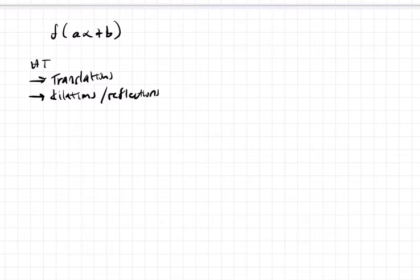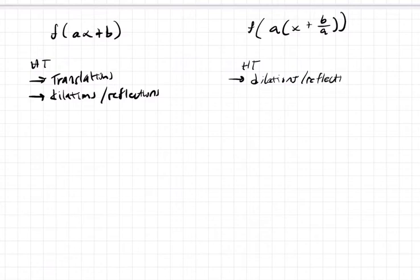But what if you had it in a different form? You factored a out. So if you factor a, you get x plus b over a. Now, in this case, to solve for x, what would you probably do first? You'd probably divide by whatever a is. And that is the dilation and reflection piece, so that's coming first—dilation and reflections.